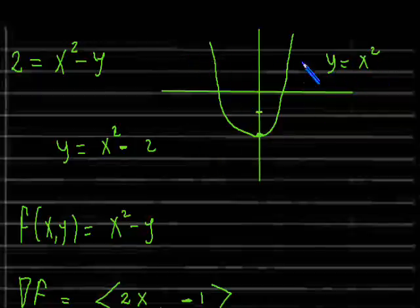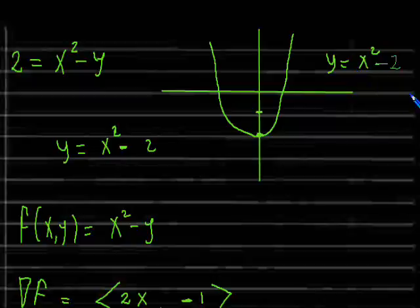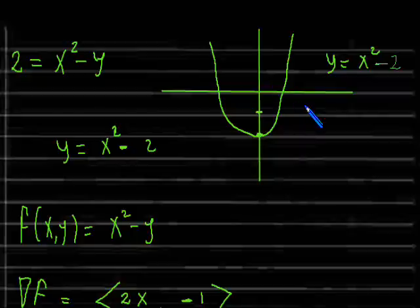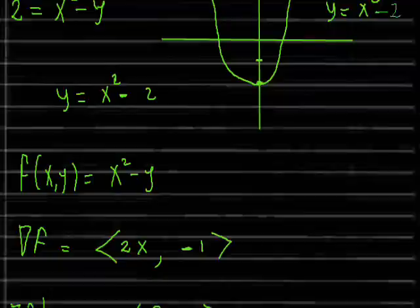I have to put a minus two here. So this is the graph of y = x² − 2. And of course, this is just the level set of the function f(x, y) = x² − y when f(x, y) = 2.